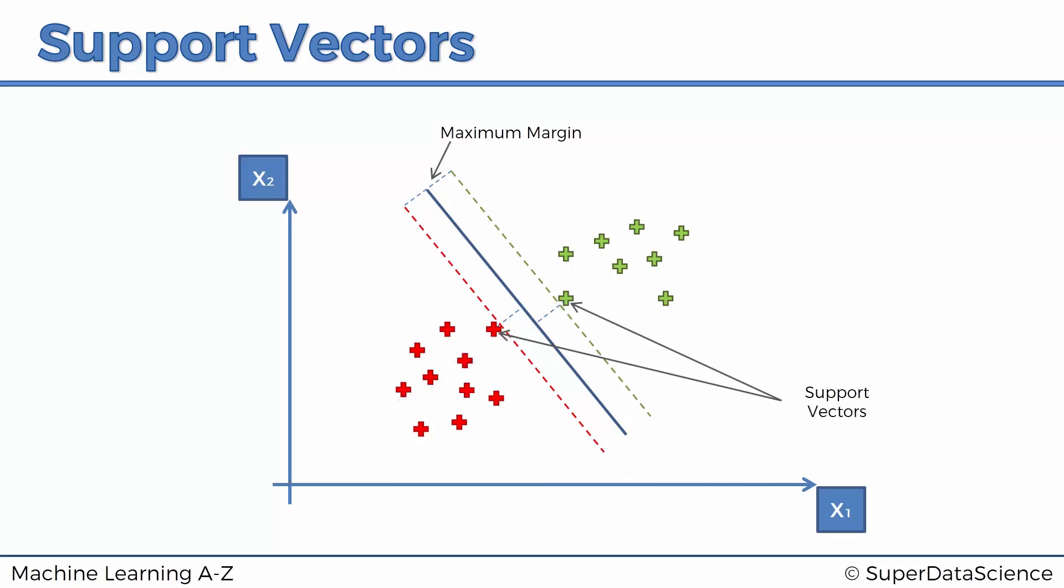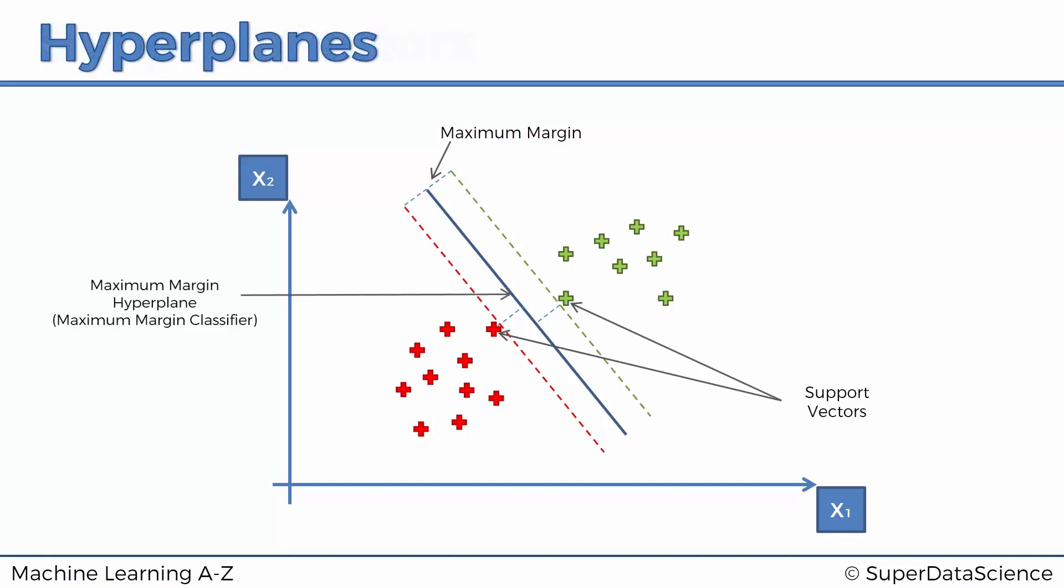These two specific vectors are the ones supporting this decision boundary. That's why they're important, and that's why this whole algorithm is called the support vector machine. We've got the line in the middle, which is called the maximum margin hyperplane or the maximum margin classifier.